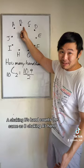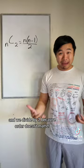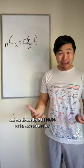So with the cat example, there were n number of ways of picking the first cat, and n minus one ways of picking the second cat. And we divide by two because order doesn't matter. We double counted. And with the handshake example, there were n number of people shaking n minus one hands. And we divide by two because we double counted.